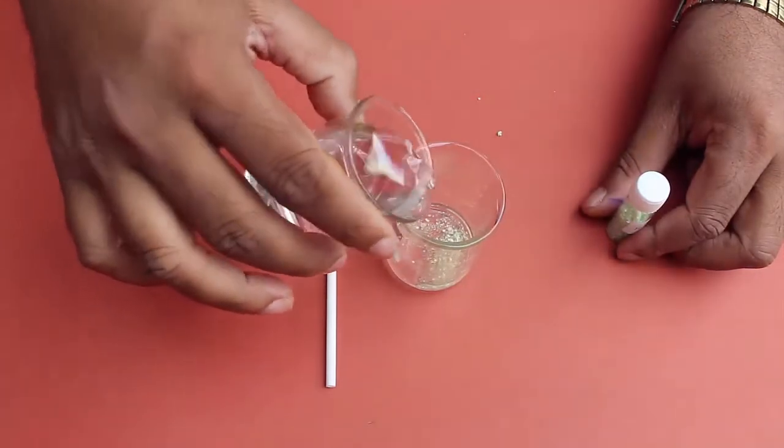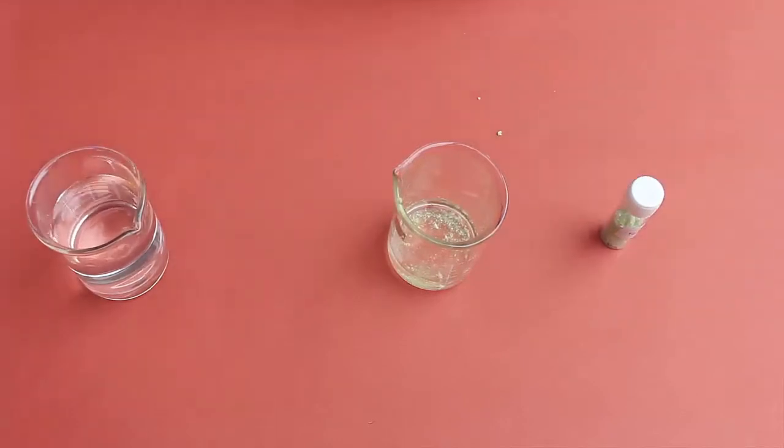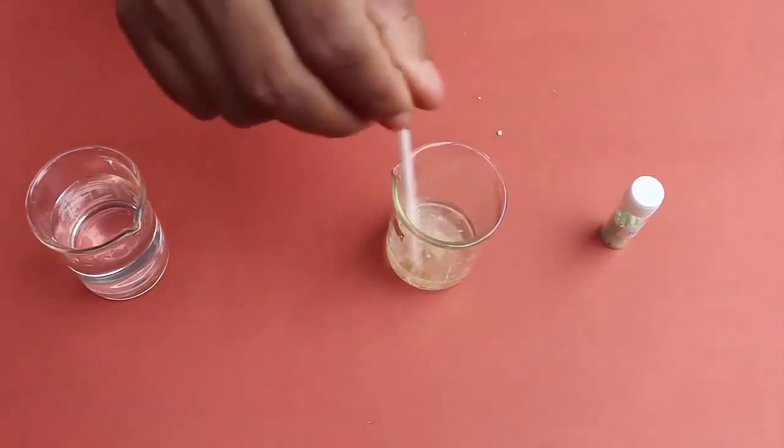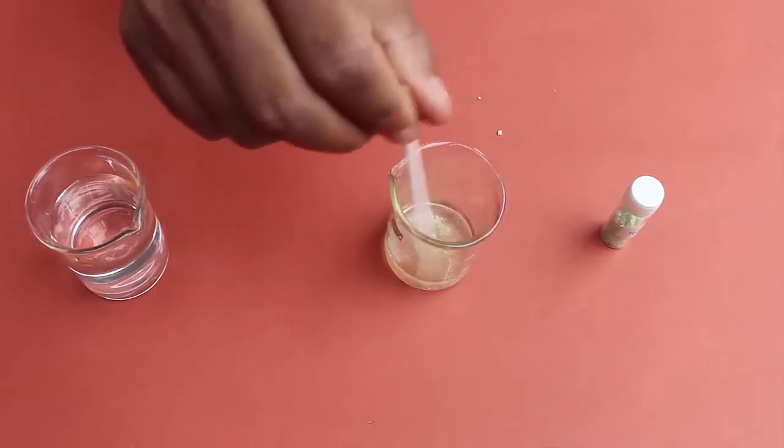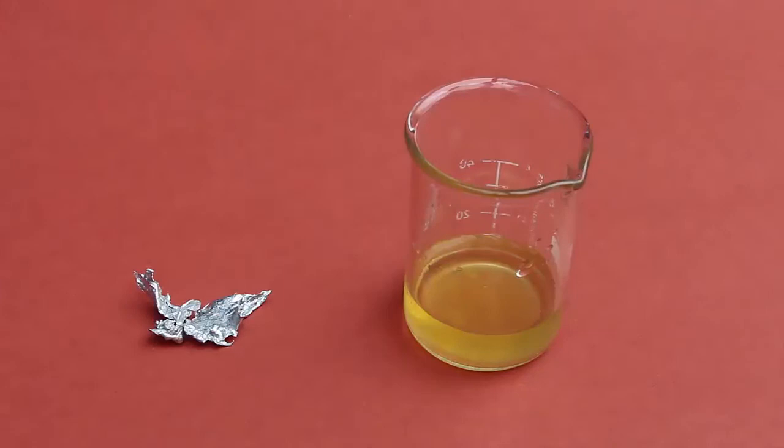After a little while, you will get a clean solution of ferrous sulfate. This solution will be slightly pale yellow in color.